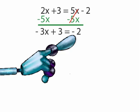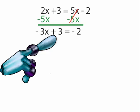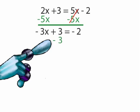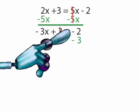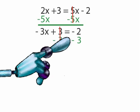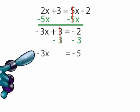To further isolate the x on one side, we will get rid of the positive 3 by adding a negative 3. Since we are doing this to one side, we also have to add a negative 3 to the other side. The two 3s cancel out. Negative 2 plus negative 3 equals negative 5. Our equation now reads, negative 3x equals negative 5.